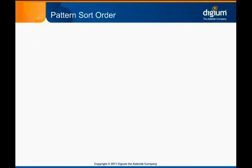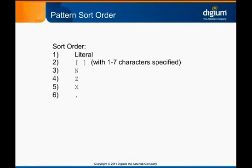In a production environment, it's not uncommon for there to be numerous pattern matching extensions. This means that a particular dialed number may match more than one extension — perhaps a literal match in one pattern, or even two or more different patterns. Therefore, it's important to understand the sort order Asterisk uses when looking up a dialed extension. Asterisk scans the dial plan digit by digit from left to right. When more than one extension matches, Asterisk will pick the most specific match. A literal match matches ahead of a pattern specifying a range in brackets, while a range between 1 and 7 characters matches ahead of N. Z matches 9 characters and is even less specific, so it matches after N. X matches 10 characters, so it's less specific than Z. The dot wildcard is the least specific match, so it won't match unless there's no other match possible.